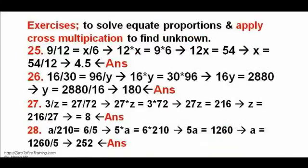Exercises 25, 26, 27, and 28. To solve, equate proportions and apply cross multiplication to find the unknown. The answers are 50, 16, 42, and 12, respectively. Additional answers are 4.5, 180, 8, and 252, respectively.